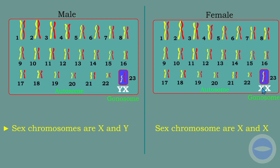In a female karyotype, the sex chromosomes are X and X. So in females it is XX and in males it is XY. If you check the sizes, they are not equal — in males the Y chromosome is very small while the X chromosome is large. Females have two large X chromosomes. Both male and female karyotypes contain 22 autosomes which control the structure and functioning of the body; the only difference is on the sex chromosomes.